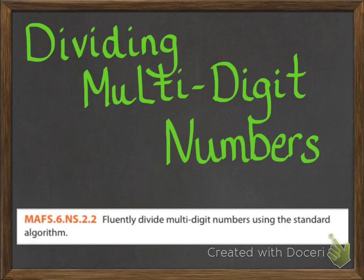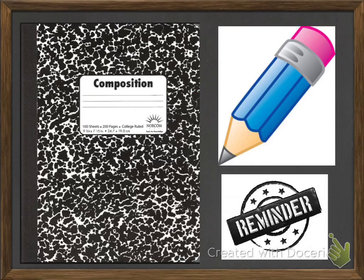This lesson is on dividing multi-digit numbers. It comes from the standard 6.NS.2.2: fluently divide multi-digit numbers using the standard algorithm. You need to have your composition notebook out, and remember you also need a sharpened pencil and you do need to take notes throughout the lesson.